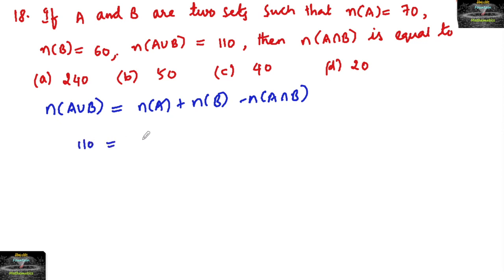So here 110 = 70 + 60 - N(A∩B), or N(A∩B) = 70 + 60 = 130 - 110, which gives the answer 20.